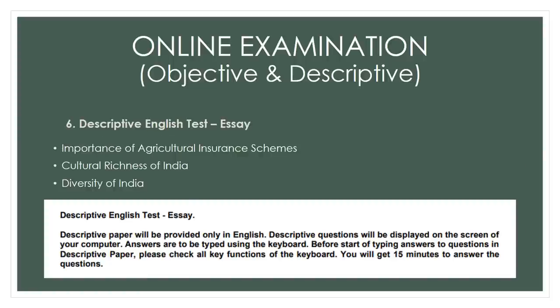Coming to the descriptive essay part: there were three questions this time. The first question was on the importance of agriculture insurance schemes, the second was on cultural heritage of India and diversity of India. Among the three, you need to answer any one question in 15 minutes. The answer should be around 150 words — about 4 to 7 sentences — and time was sufficient to answer.